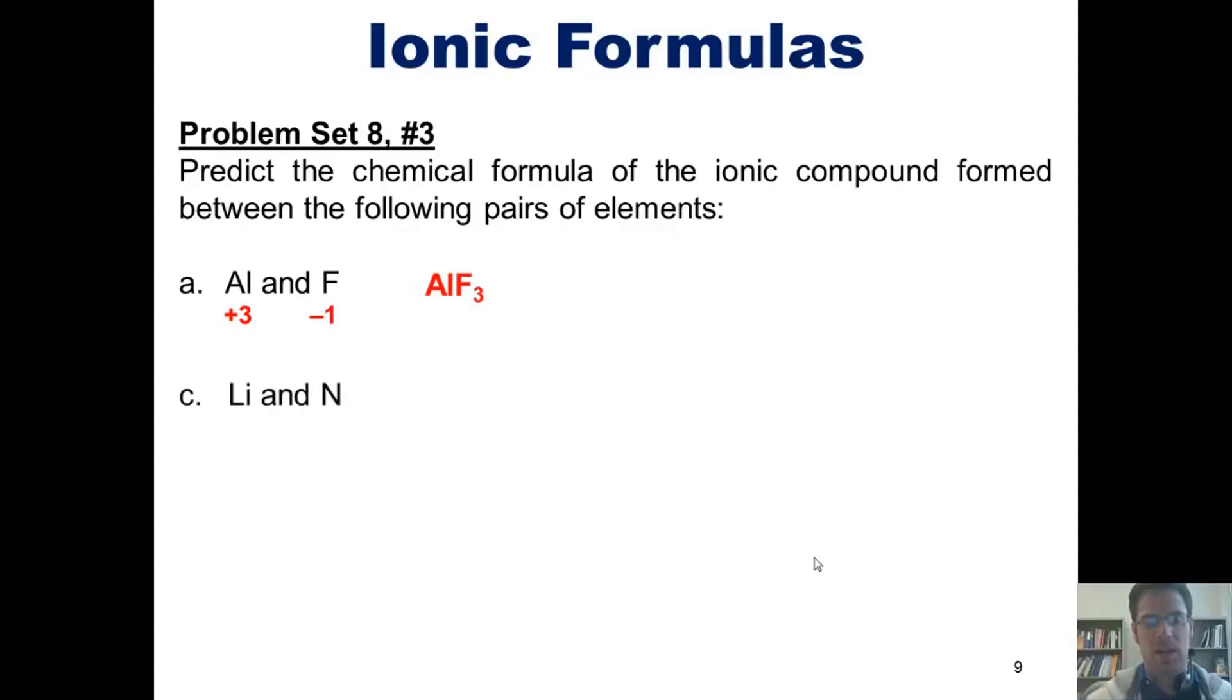Here's another example, lithium and nitrogen. Lithium is in group 1A of the periodic table, which means it's going to want to have a charge of plus one. While nitrogen is in group 5A of the periodic table, which means it's going to want to gain electrons to feel like the nearest noble gas, neon. Thus,